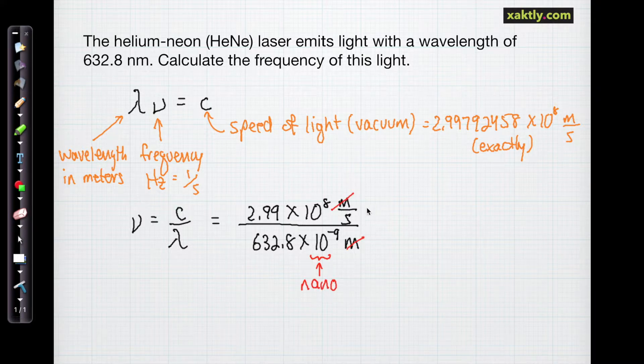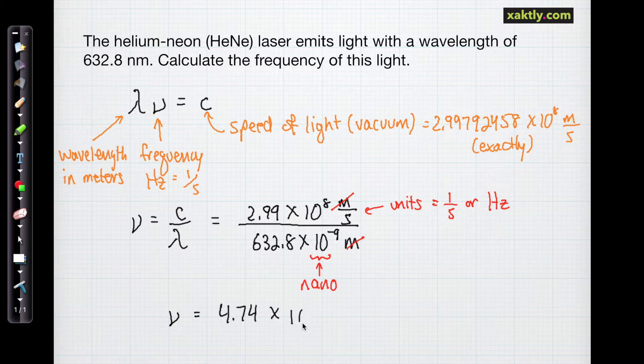Now when we cross out our units we see that we're left with units of one over seconds which is frequency or hertz. And all that remains is just to do the arithmetic. So the frequency is going to be 4.74 times 10 to the 14th hertz.